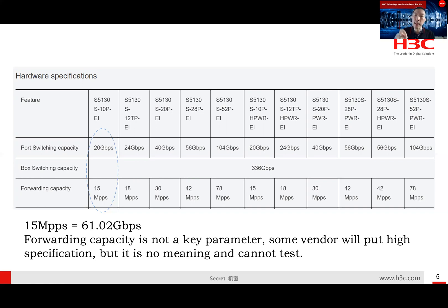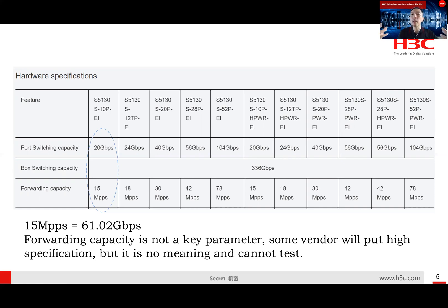These technical issues need to be explained clearly to the customer. Don't just pursue a very high forwarding capacity number in the datasheet - it has no meaning at all. We need to understand the meaning behind the parameters and then select the right product. When we look at port switching capacity and box switching capacity at the backplane, we need to be very careful and understand how many devices can connect and what performance you will actually achieve. Just pursuing the number is not practical.